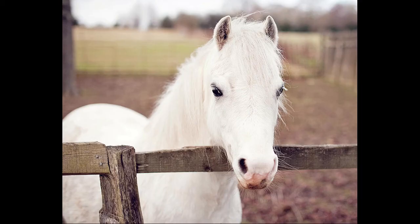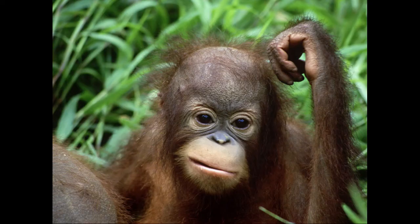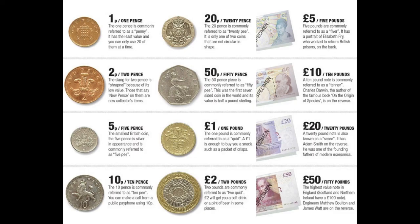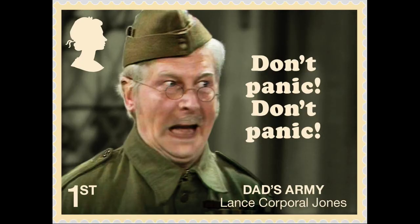There was a ten shilling note known as a ten bob note. A pony is a slang phrase meaning 25 pounds and a monkey is 500 pounds. After 1971, a pound became worth 100 pence or 100p. Life became less colorful and less connected to the past.